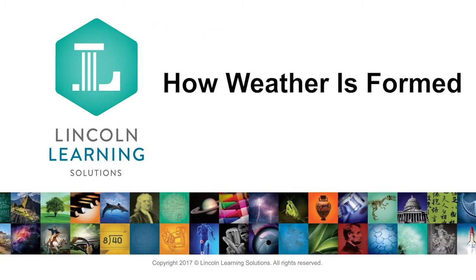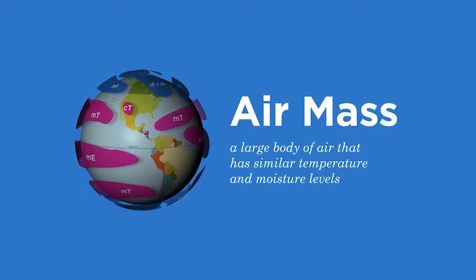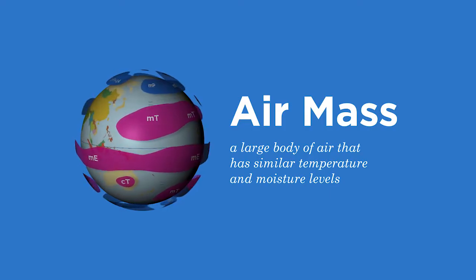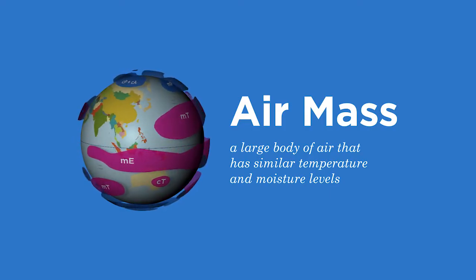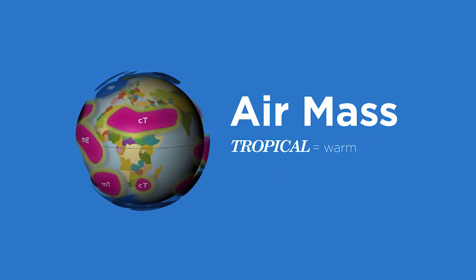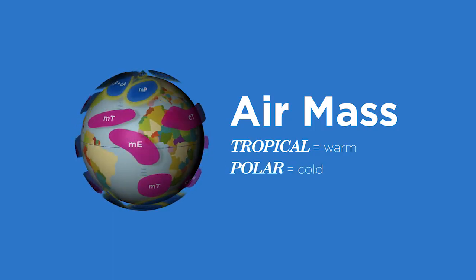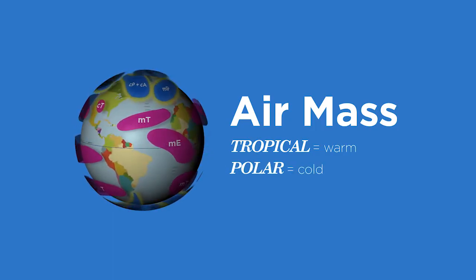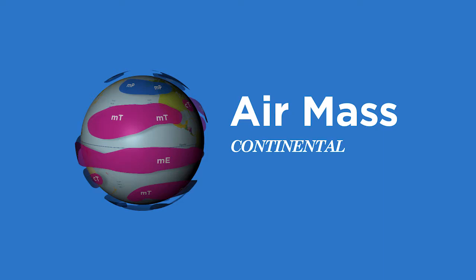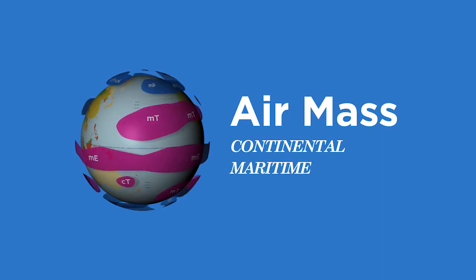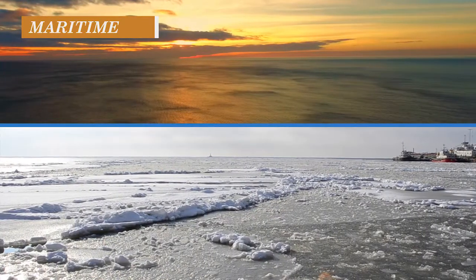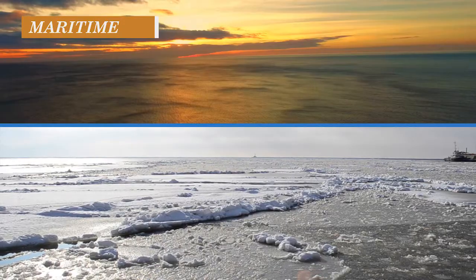An air mass is a large body of air that has similar temperature and moisture levels. Different types of air masses are categorized by their temperature and moisture levels. For instance, tropical and polar air masses are categorized according to temperature. Tropical air masses are typically warm, and polar air masses are typically cold. The two types of air masses categorized by moisture level can be described as continental or maritime. Continental air masses are typically dry and form over land, whereas maritime air masses have more moisture and usually form over water sources.